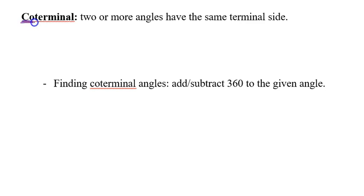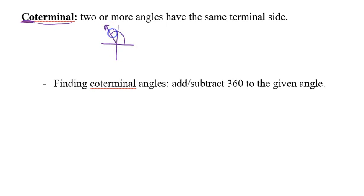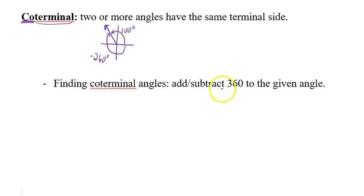Next we'll talk about coterminal angles. 'Co' should be a familiar prefix, and 'terminal' refers to the terminal side of an angle. Two or more angles are coterminal when they share the same terminal side — they land in the same place. For example, 100 degrees and negative 260 degrees share the same terminal side. To find coterminal angles, simply add or subtract 360 from the given angle.